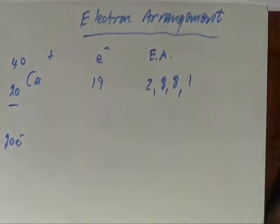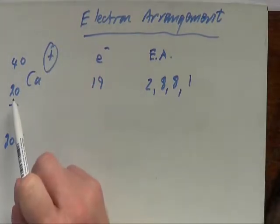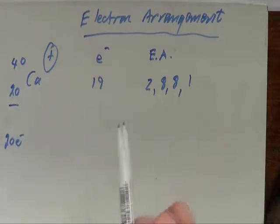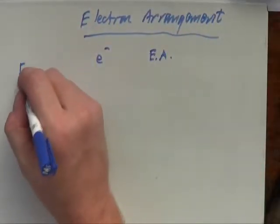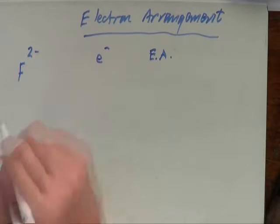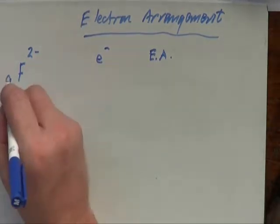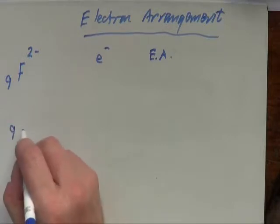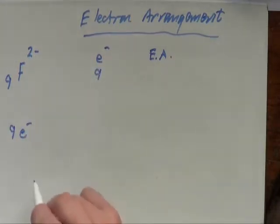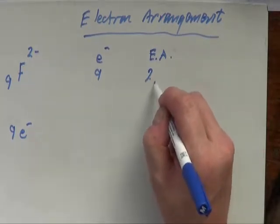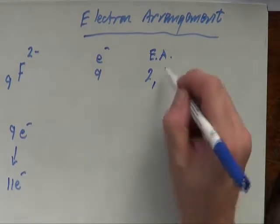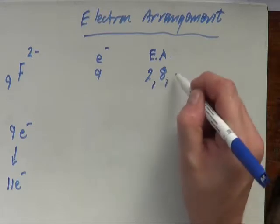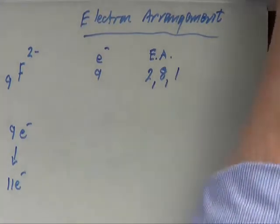It's really important that you pay attention to this — lots of people get it wrong because they just look at the element, see 20, and write 2,8,8,2 and lose a very simple mark. Let's take fluorine and make it 2−. We go to the periodic table — atomic number of fluorine is nine — so it originally had nine electrons. It has gained a 2− charge so it now has eleven electrons. The electron arrangement must be 2,8,1 — giving 2,8,1.